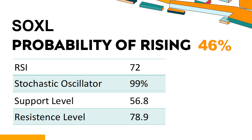The current stochastic oscillator of SOXL is 99%. When the stochastic oscillator rises above the 80 level, it is usually considered overbought, indicating that the stock may be due for a price pullback. An overbought condition occurs when a stock's price rises too fast and too high in a short period of time and can be a sign that buying pressure has exhausted. Combining multiple technical analysis indicators, SOXL has 4 bullish signals and 3 bearish signals.